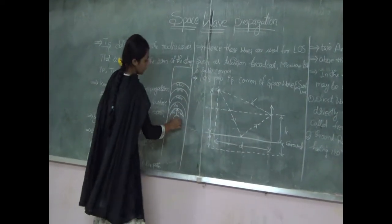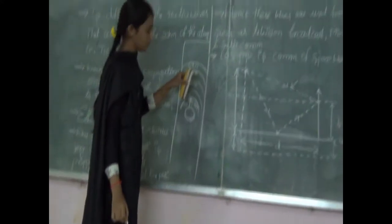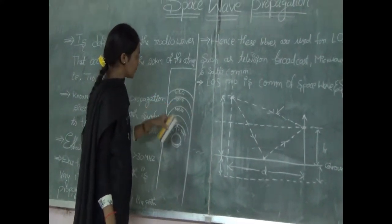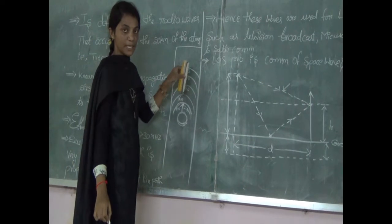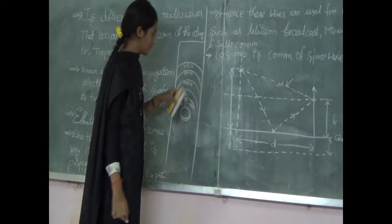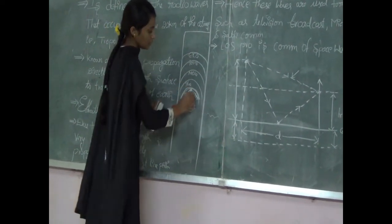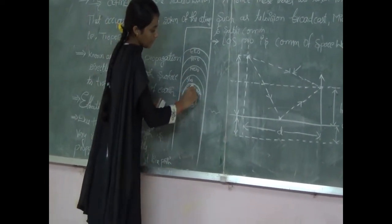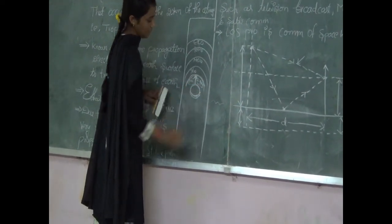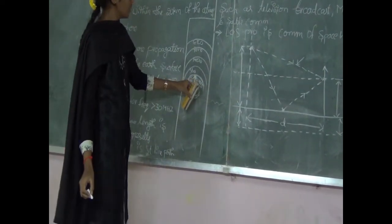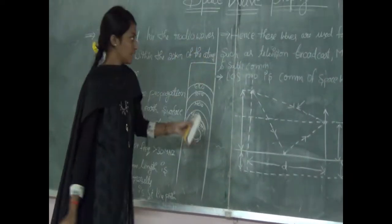In our atmosphere, we have five layers: the troposphere, stratosphere, mesosphere, thermosphere, and exosphere. From our earth, above the 20 kilometers, that is the troposphere. In that troposphere, we have space wave propagation.